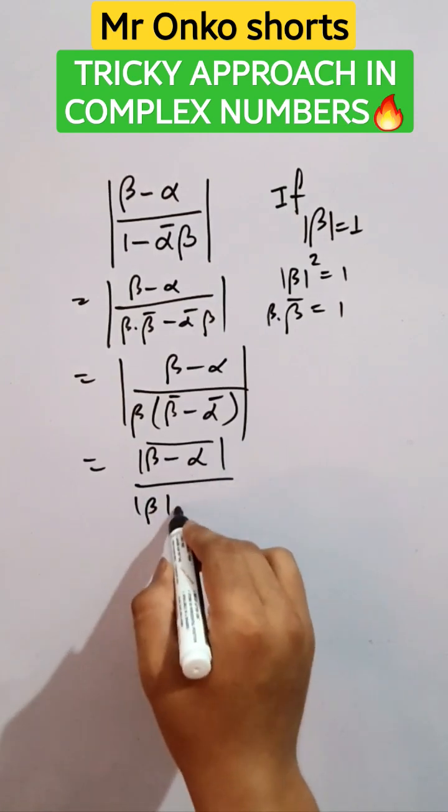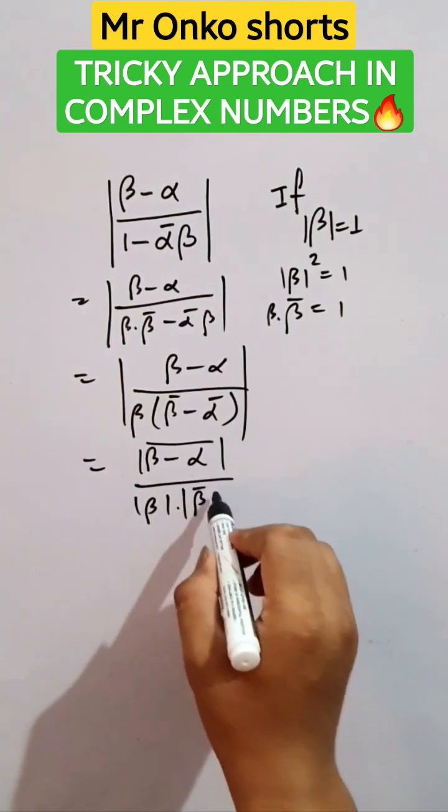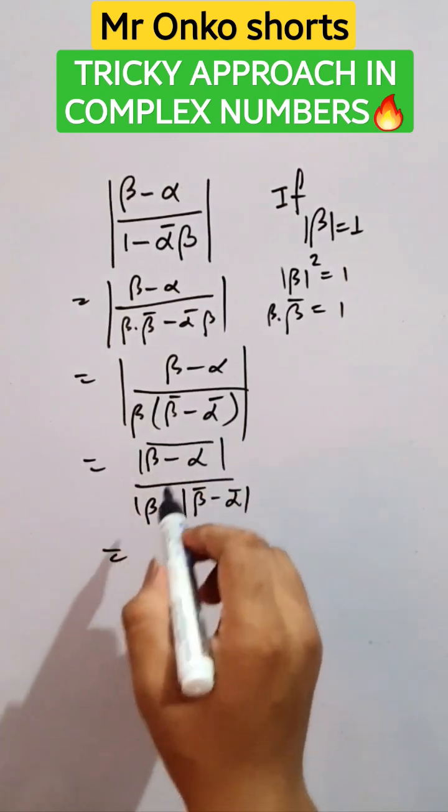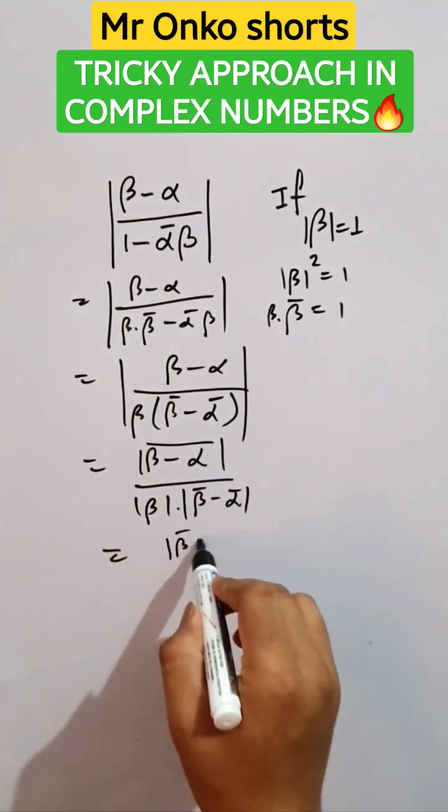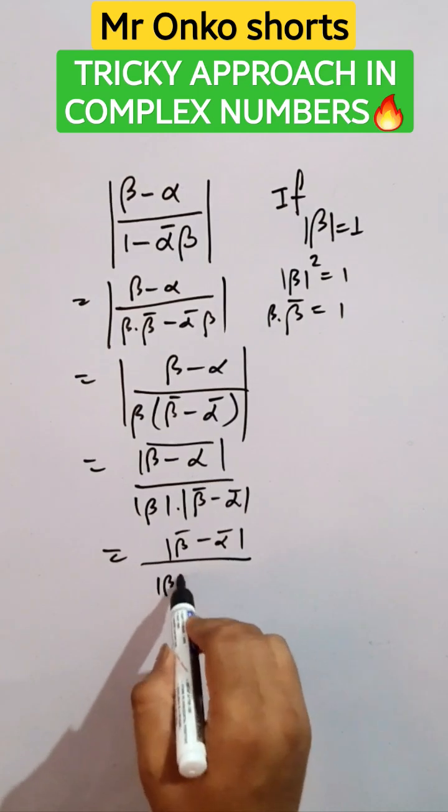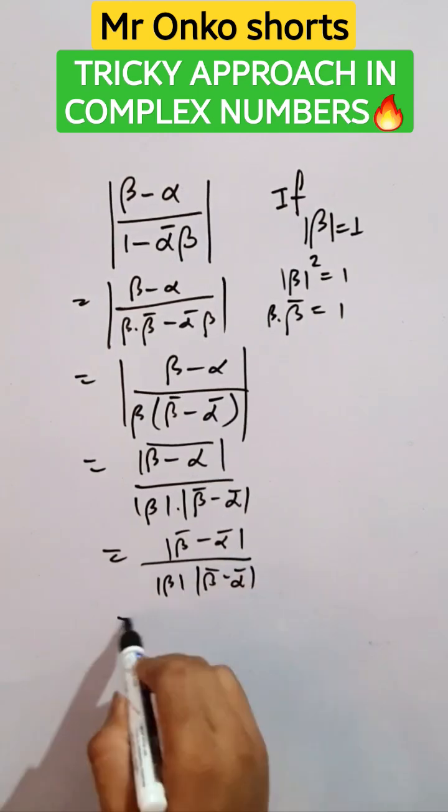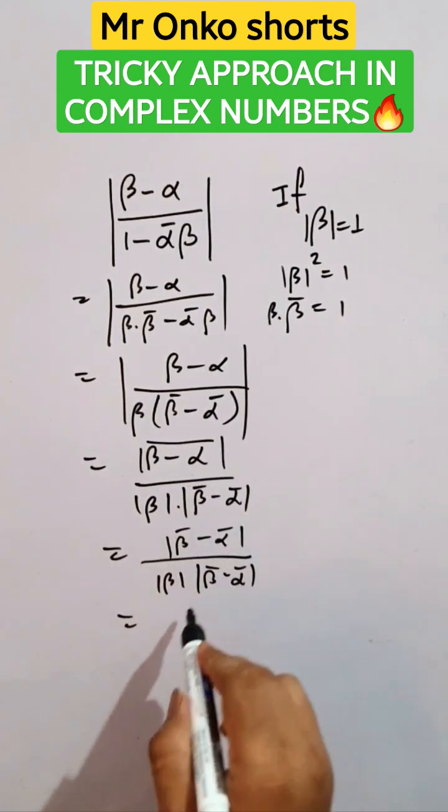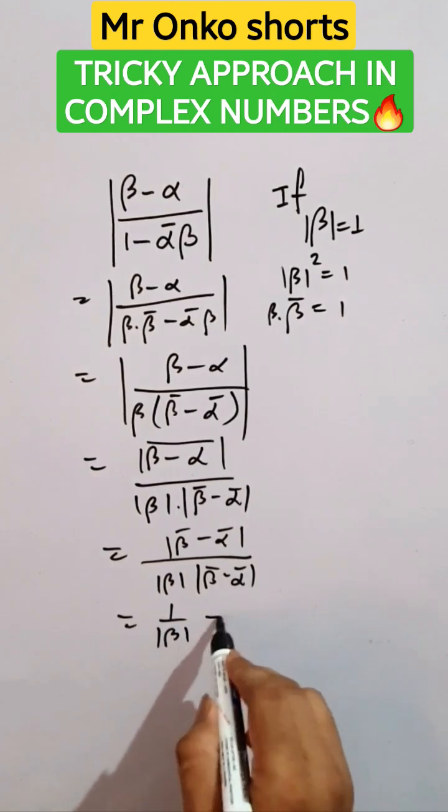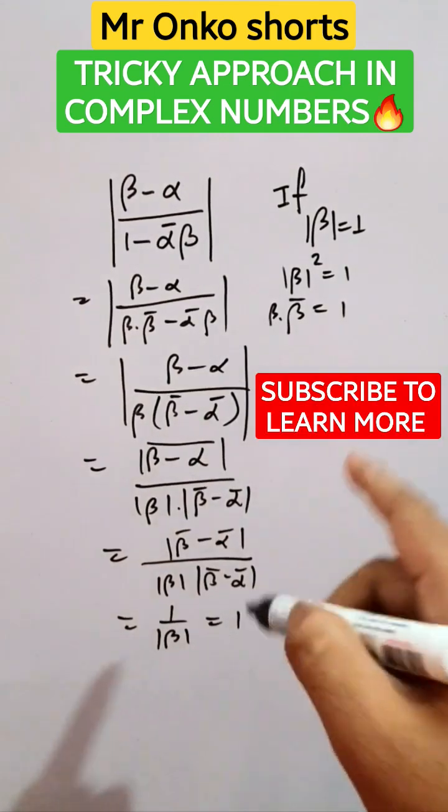Now this can be managed as mod beta bar minus alpha bar individually. So this divided by this will be one, and one by mod beta will be one, since beta is one. This is the answer of the given question.